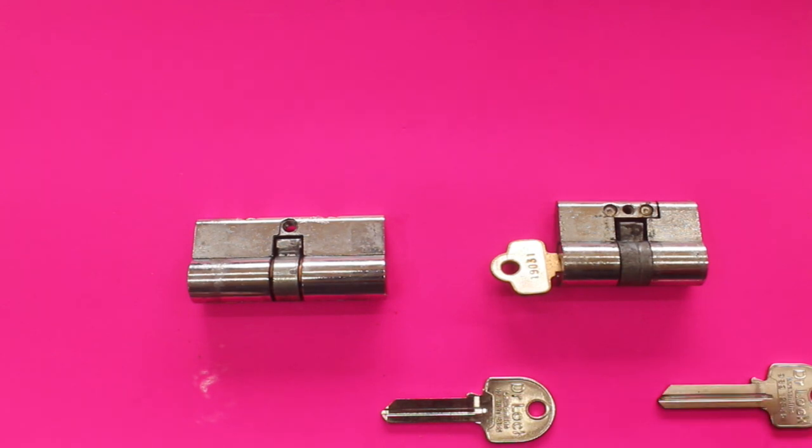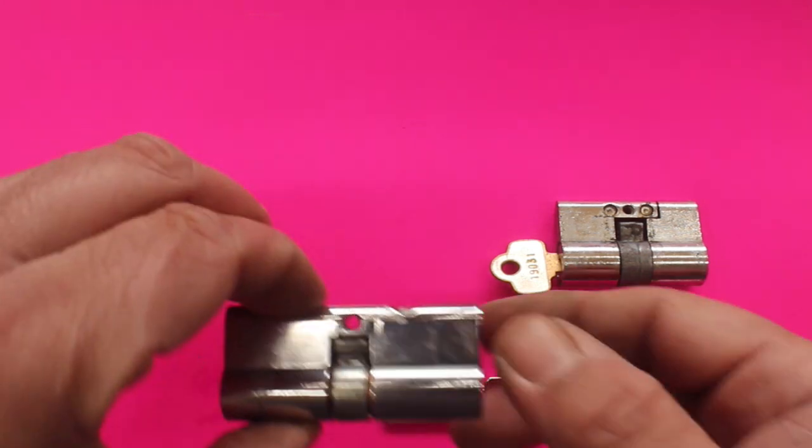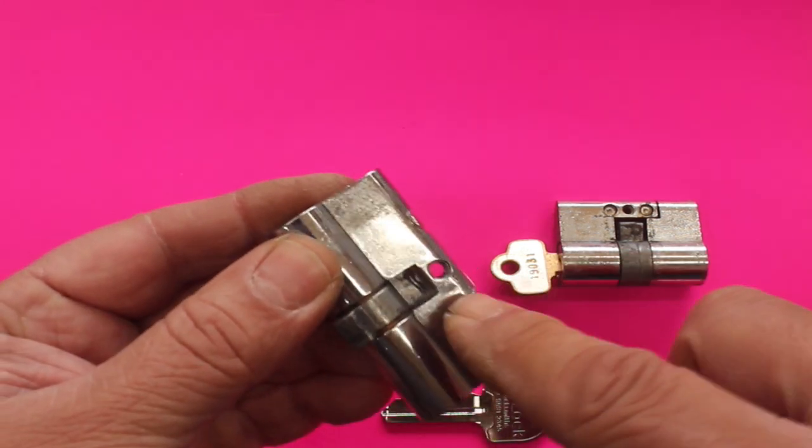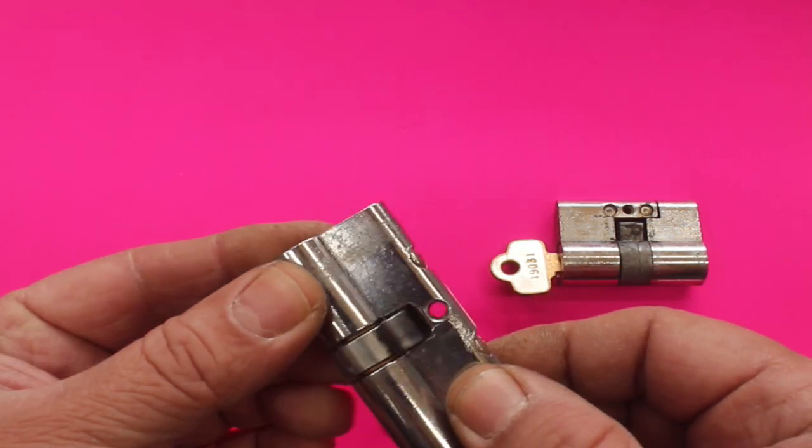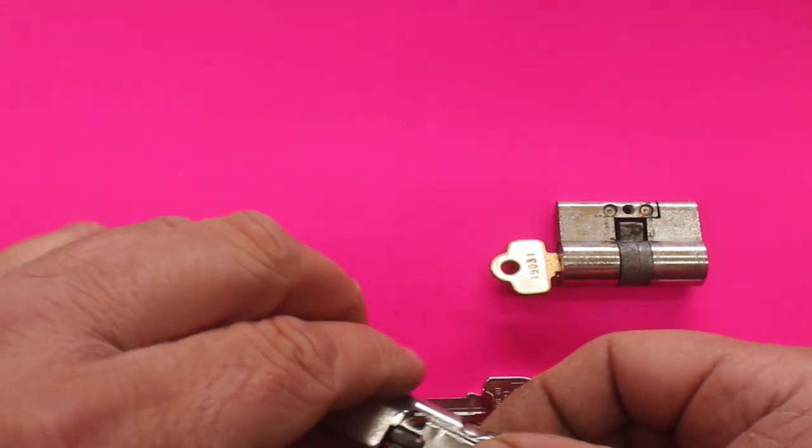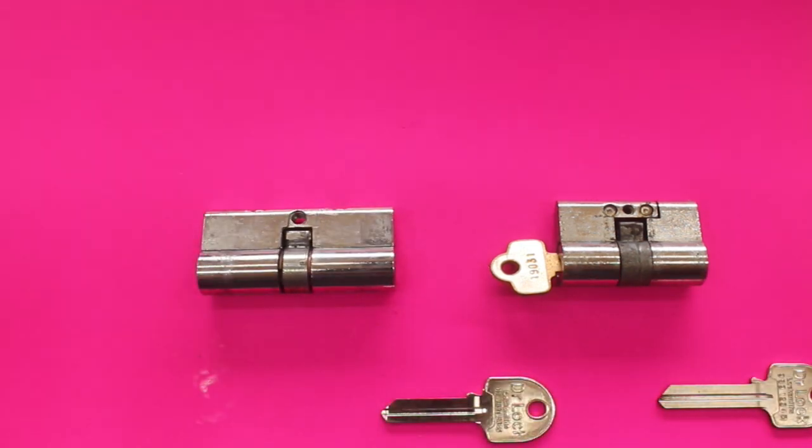There is one more which we don't have here to show you, and that's for the Austral Ultimate. The Austral Ultimate screen door lock has a little tiny spring in here. These ones don't, and that little tiny spring is unique to Austral Ultimate locks screen door locks.